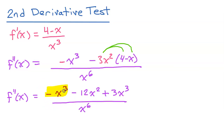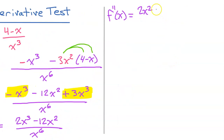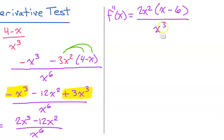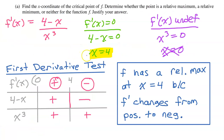I notice like terms that combine to give two x to the third power. In the numerator I have a common factor of two x squared, so I factor that out. f double prime of x equals two x squared times x minus six, all divided by x to the sixth power. The two x squared in the numerator cancels two of the x's in the denominator, leaving f double prime equal to two times x minus six over x to the fourth power.